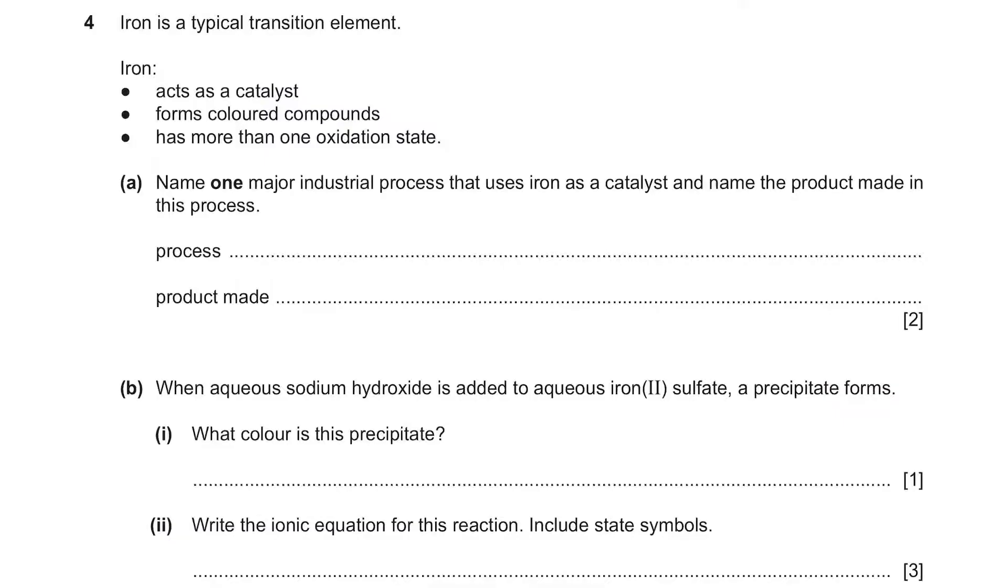These are actually the features of a transition element. Part A says, name one major industrial process that uses iron as a catalyst and name the product made in this process. So the famous process where they use iron as a catalyst is the Haber process and this process is used to make a product called ammonia.